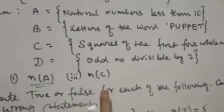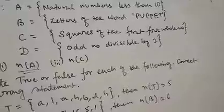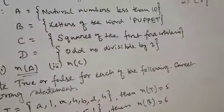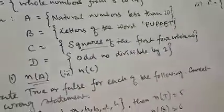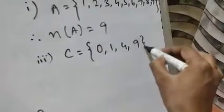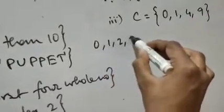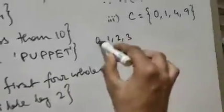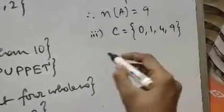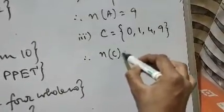Question number 3: find n(C) where set C = squares of the first four whole numbers. Whole numbers start from 0, so the first four whole numbers are 0, 1, 2, 3. Their squares are: 0² = 0, 1² = 1, 2² = 4, 3² = 9. So set C = {0, 1, 4, 9}. Count the elements — there are 4 elements. Therefore the cardinal number n(C) = 4.